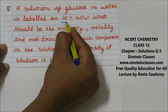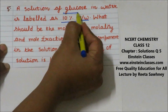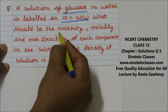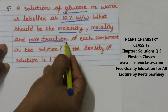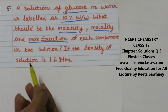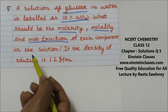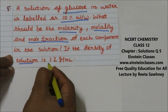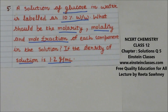We have a 10 percent weight by weight glucose solution. We need to find the molarity, molality, and mole fraction of each component — solute and solvent. The solute is glucose and the solvent is water. The density of the solution is 1.2 gram per mL.